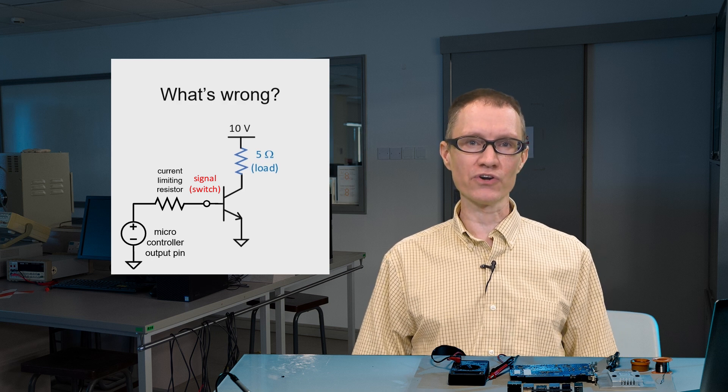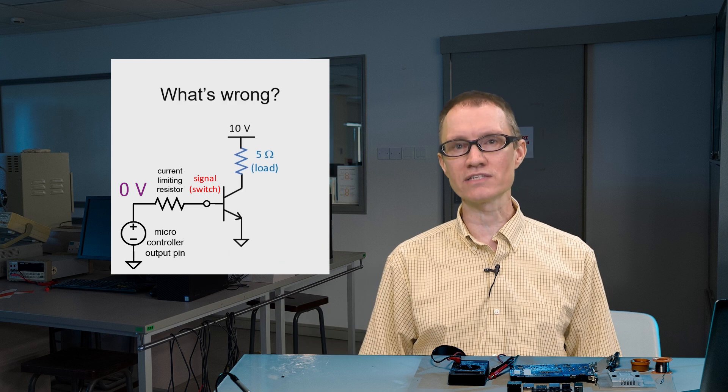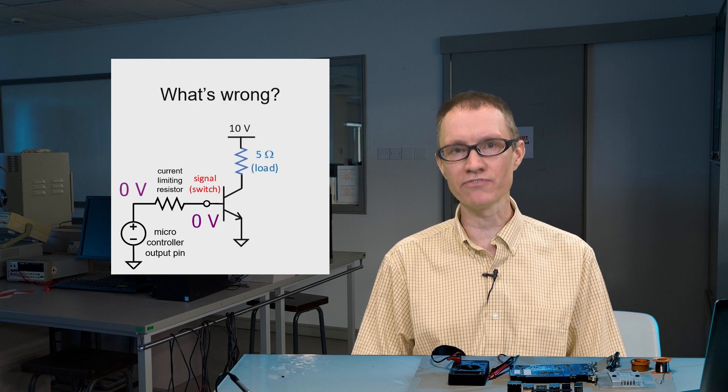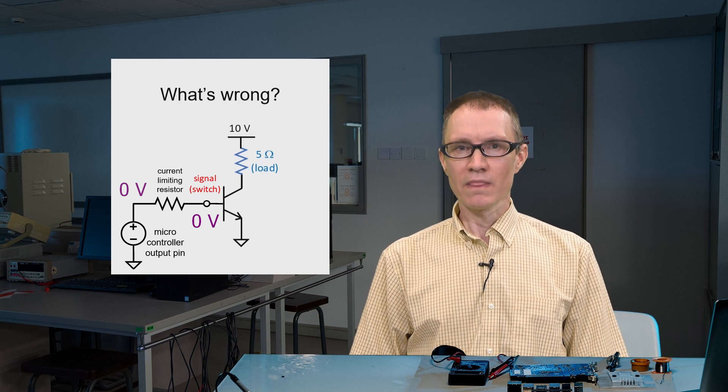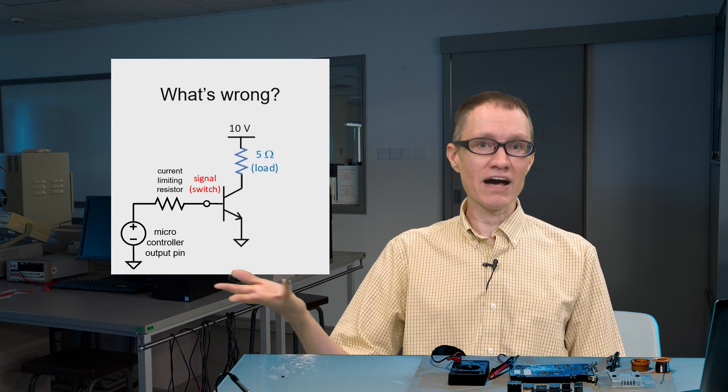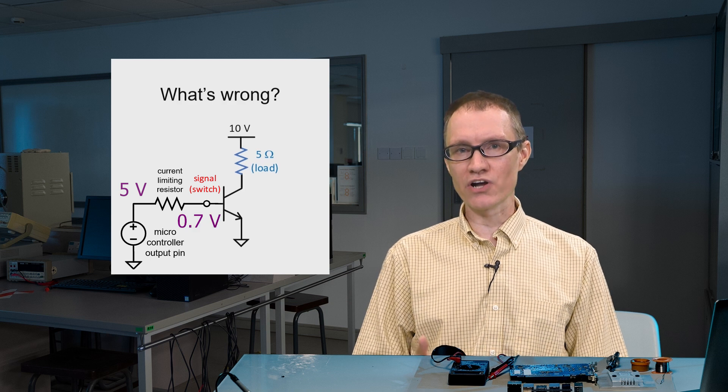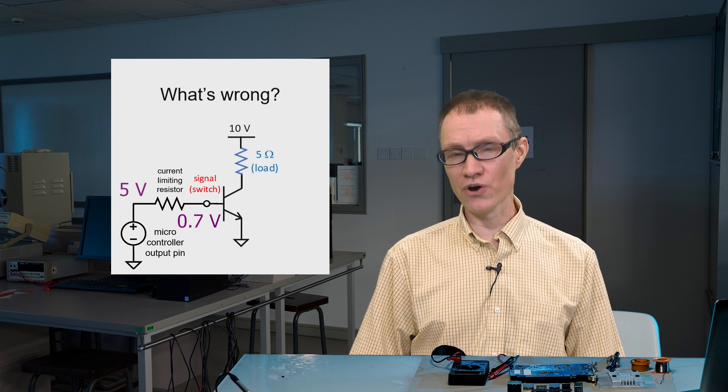If the microcontroller inputs 0 volts to the transistor, then the transistor will be in cutoff. Basically it's turned off and we won't have any current through the load. If the microcontroller gives us a 5 volt signal, then the transistor will turn on and we'll have some current going through the load.